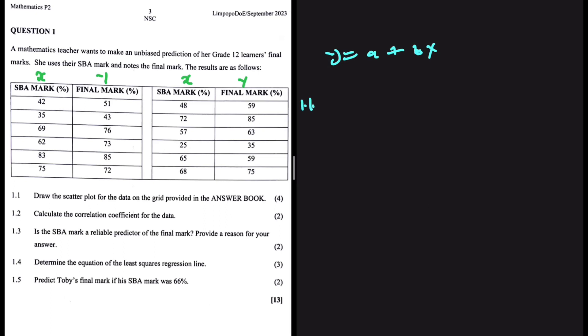In question 1.1, we're supposed to draw a scatter plot for the data, but we're just going to go ahead and start with 1.2. In 1.2, we're supposed to calculate the correlation coefficient for the data, that is r. Let me show you how we can do that with a calculator.